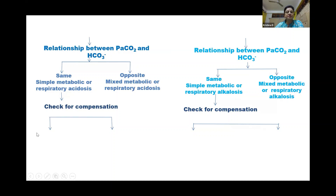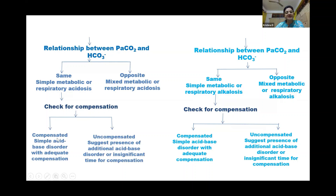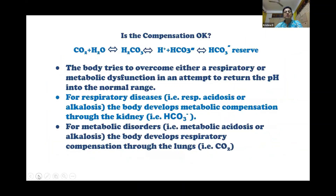Then we have to check for compensation. If the pH value is near normal, it means it is compensated — a simple acid-base disorder with adequate compensation. Otherwise, it is uncompensated, suggesting presence of an additional acid-base disorder or insufficient time for compensation. The body tries to overcome either respiratory or metabolic dysfunction in an attempt to return the pH to the normal range.